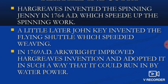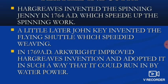Hargreaves invented the spinning jenny in 1764 AD, which speeded up the spinning work. A little later, John Kay invented the flying shuttle, which speeded up weaving. In 1769, Arkwright improved Hargreaves' invention and adapted it in such a way that it could run on water power. These were some of the inventions that took place during this century and helped in industrial production.